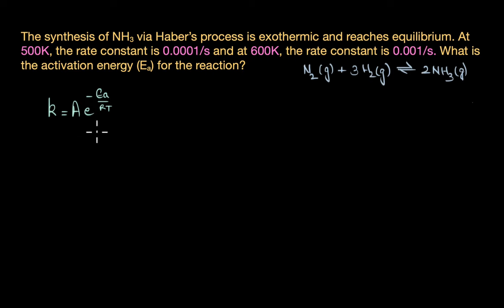A is the frequency factor or the Arrhenius factor, also called the pre-exponential factor. It accounts for the frequency or the number of collisions that result in a reaction and also the proper orientation required of the molecules for the reaction to take place, because not all collisions will result in a desired product.